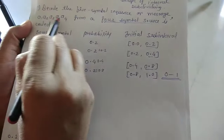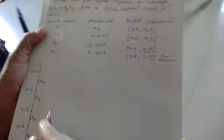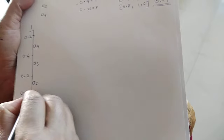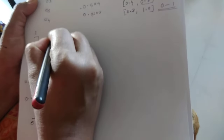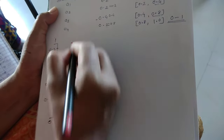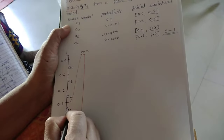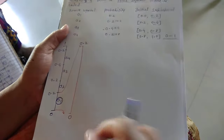Now we have to find out the message a1, a2, a3, a3, a4 — keep this in mind and solve accordingly. First is a1, so we expand the a1 interval and divide it into various subdivision parts. The a1 interval value starts from 0 and ends at 0.2. Now you have to divide this 0 to 0.2 range into different sub-interval parts.